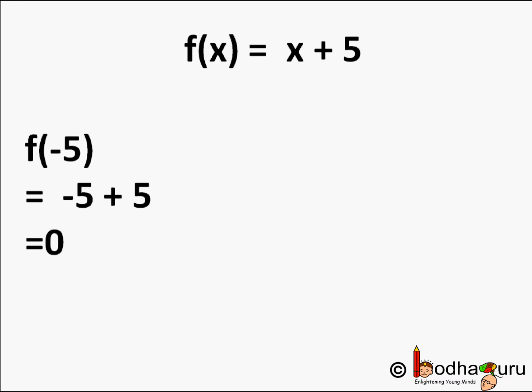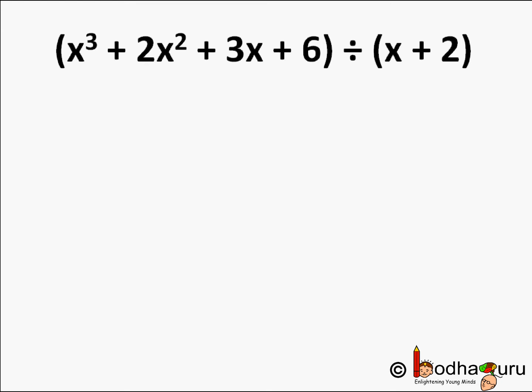Say we need to find whether (x + 2) is a factor of x³ + 2x² + 3x + 6. We don't have to do full factorization. From the factor theorem, we just need to find the value of the polynomial at the zero of the divisor. If that value turns out to be 0, then the divisor is a perfect factor.